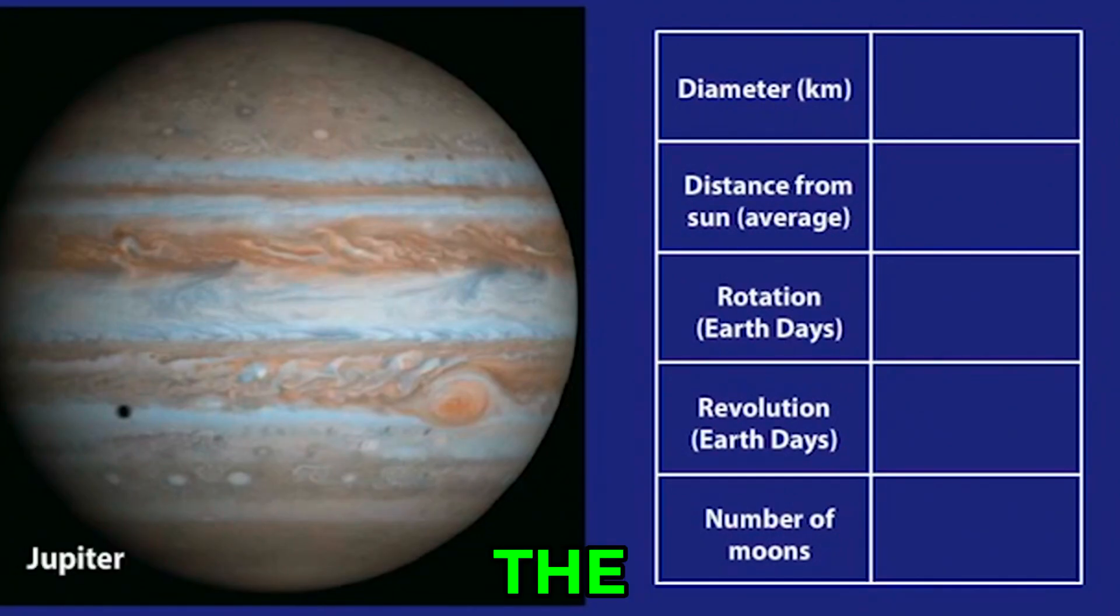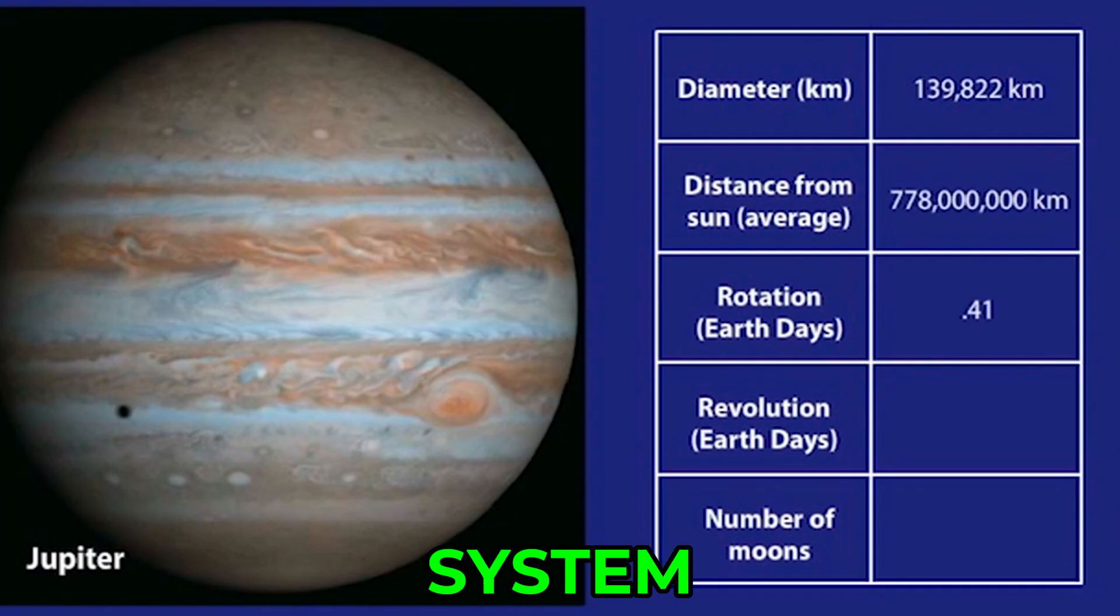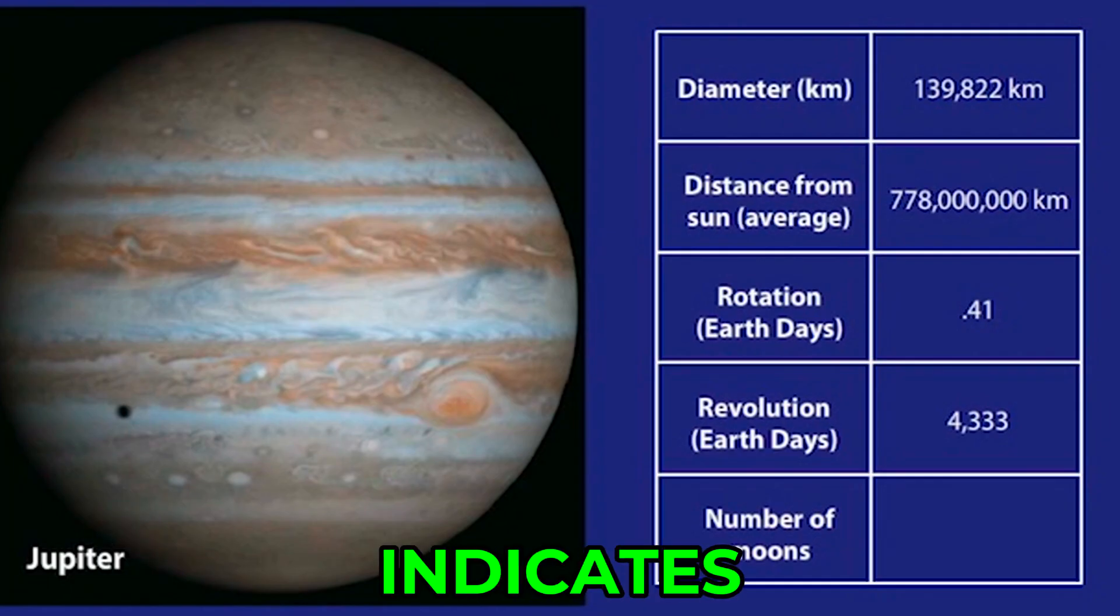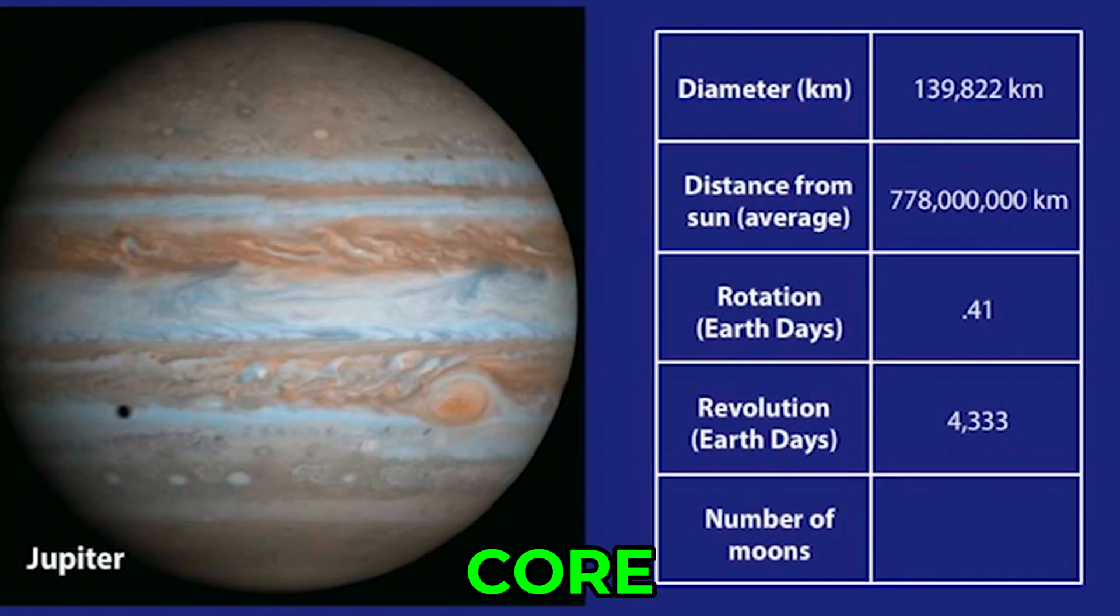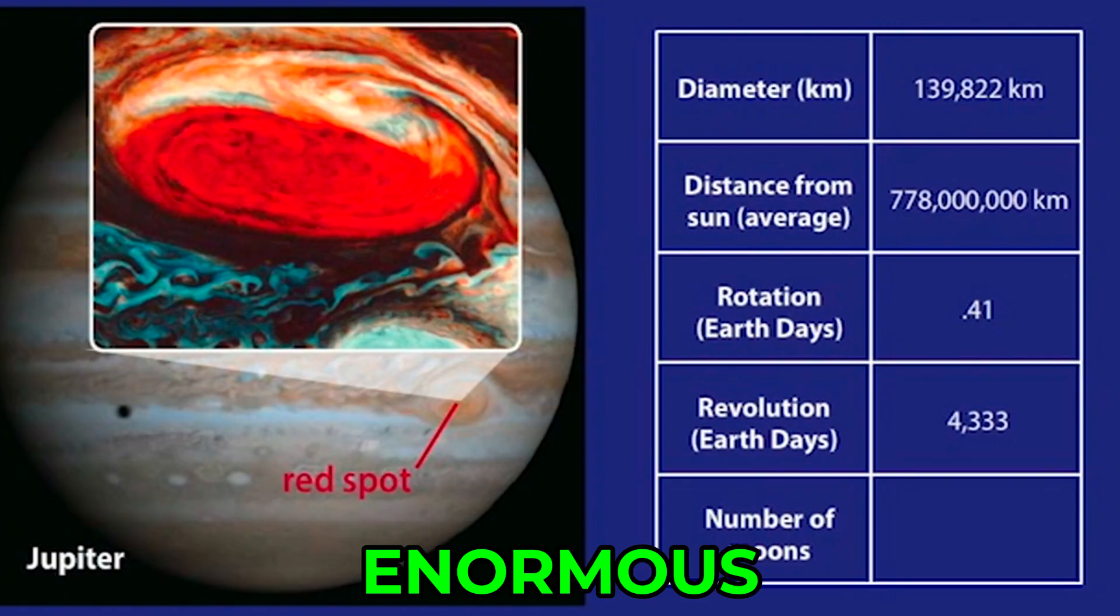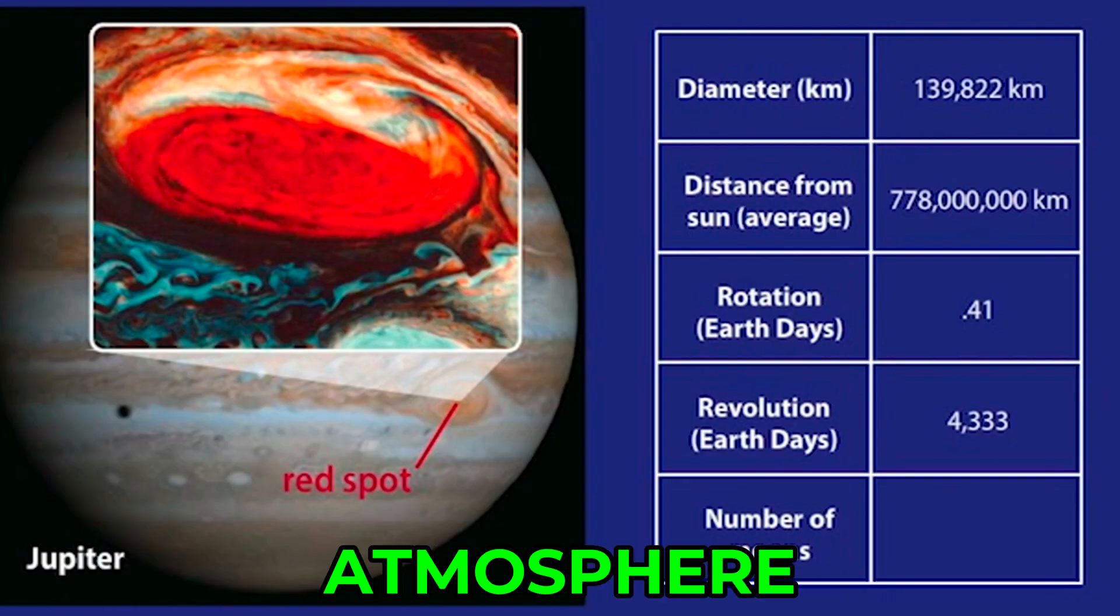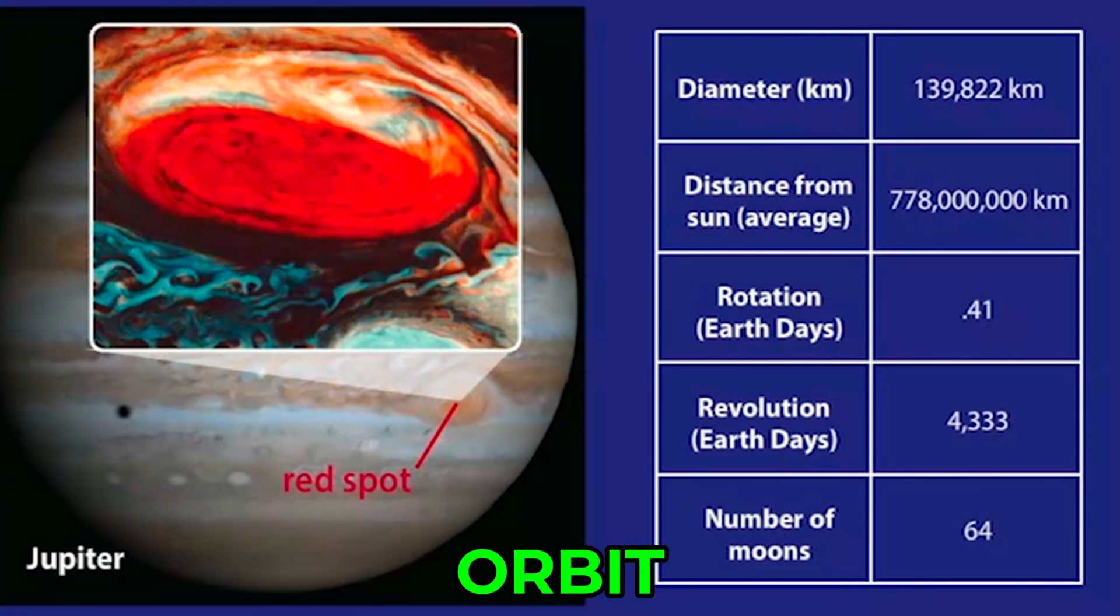Jupiter, the fifth planet from the Sun, is the largest planet in the solar system. Although primarily composed of gases, its magnetic field indicates that it may have a rocky core. It has a giant red spot that is actually an enormous storm in its atmosphere. There are 64 known moons that orbit Jupiter.